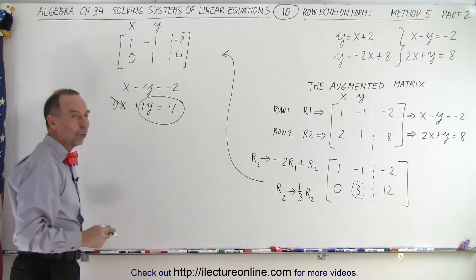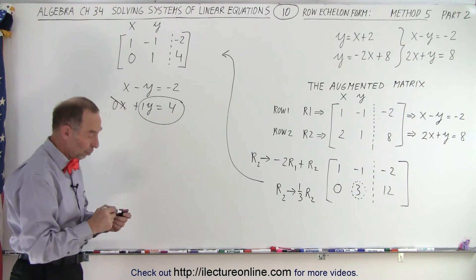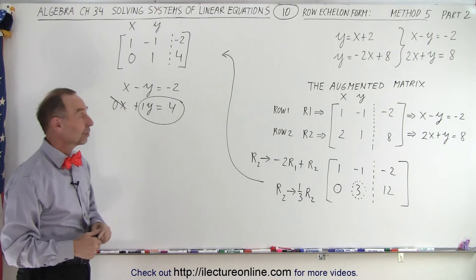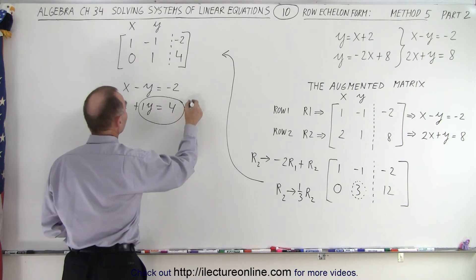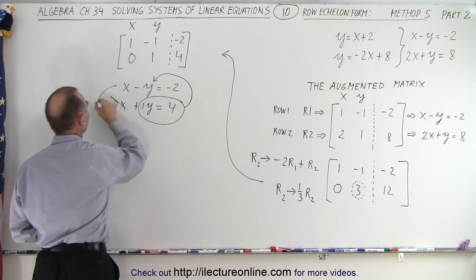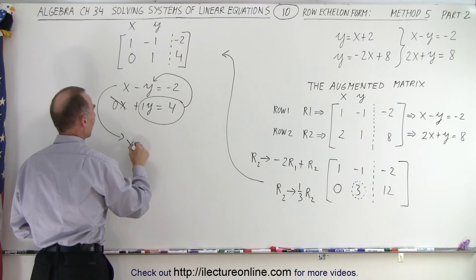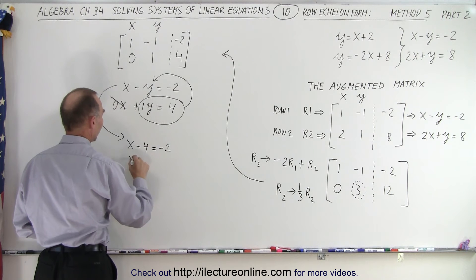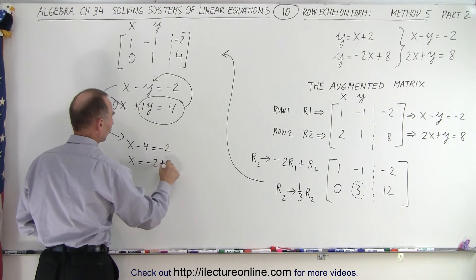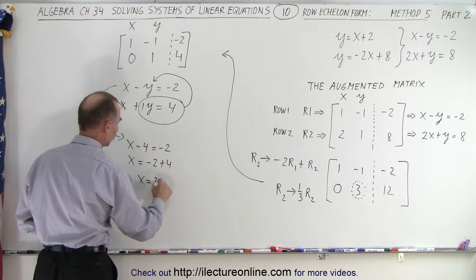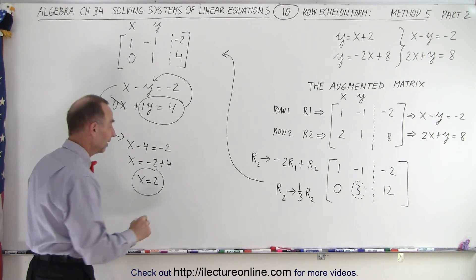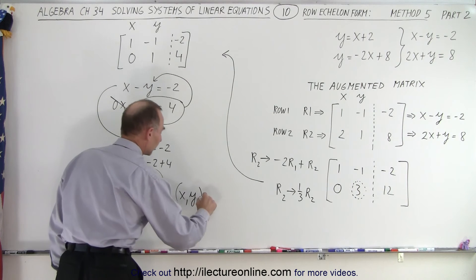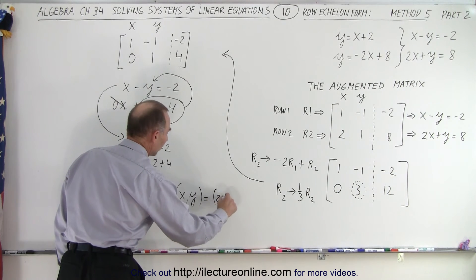By using the row echelon form I've been able to solve for one of the variables, in this case y = 4. Then I plug that back into my other equation: x - y, which is 4, equals -2. So x = -2 + 4 or x = 2. Notice the very same result. I can say that the x and y coordinates of the point where the two lines cross is (2, 4).